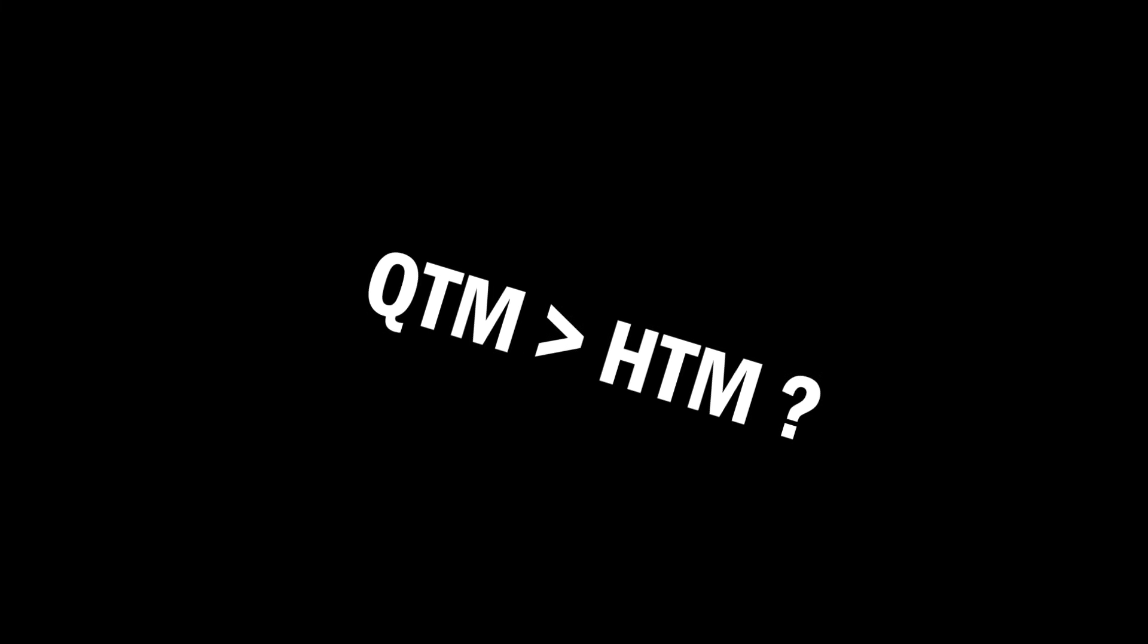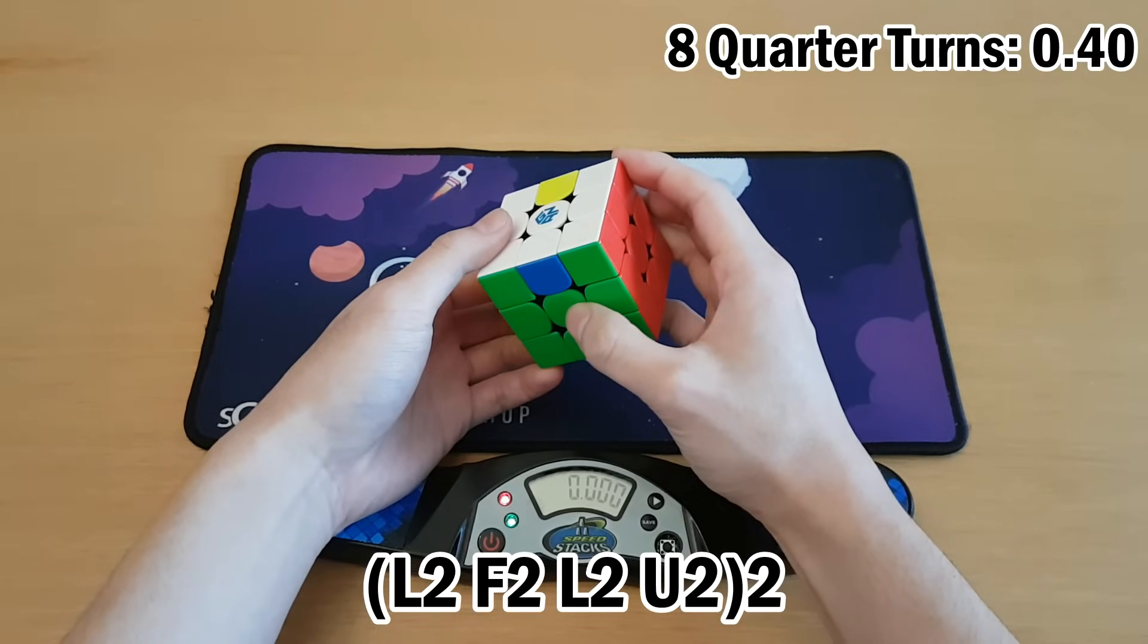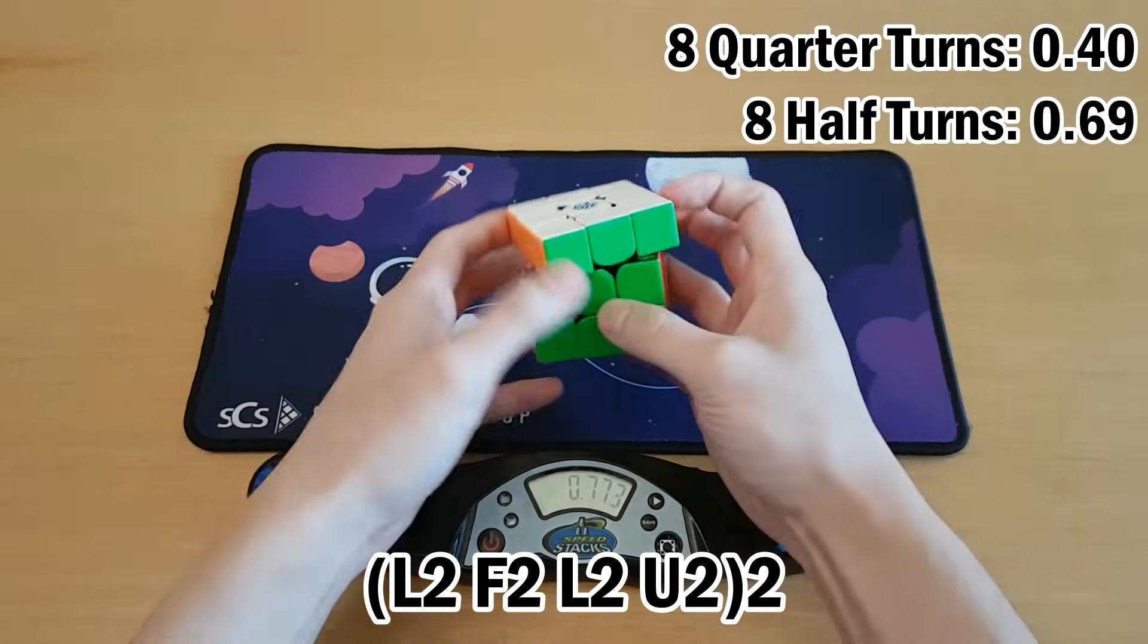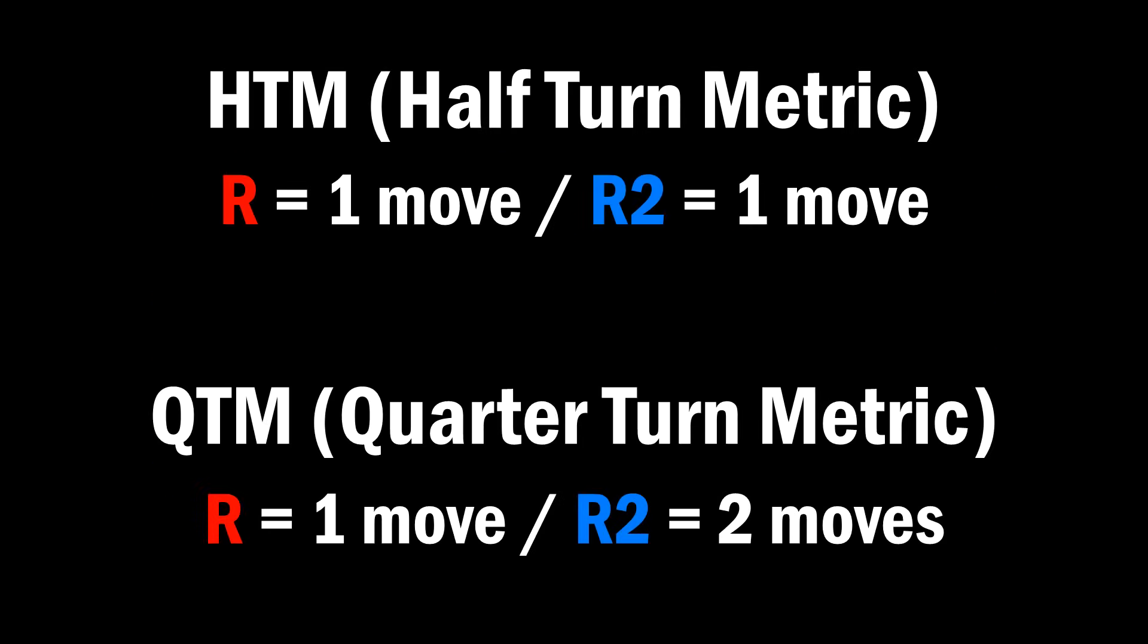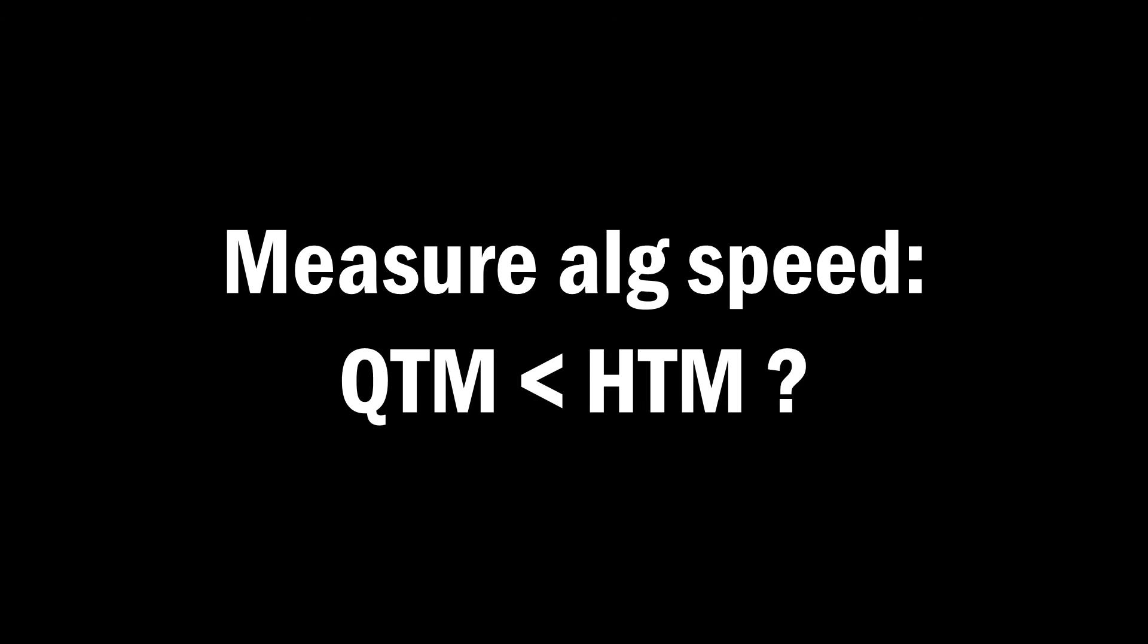This leads me to believe that quarter turns are a better way of judging how long algorithms are. Except, that's not really the full story, because here is another sequence of eight half turns. This one was much faster, even though it was a pretty similar sequence. As for right now, which one is a better metric for measuring algorithm speed? They're both kind of good. In fact, what's better than either of these is something more in between.